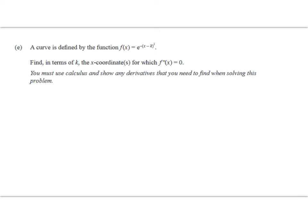We've got a curve that is given to us by this function. So it's an exponential and it's got k in it instead of a number. And we're asked to find, in terms of k, the x coordinates for which the second derivative is 0. So this is just really a plug and chug algebra question until the very last step where we need a tiny bit of brain.